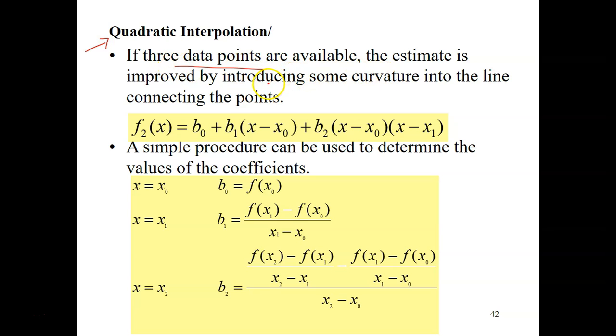Okay, so this is the formula for the second order interpolation. f2(x) equals b0 plus b1(x minus x0) plus b2(x minus x0)(x minus x1). So, what is b0? What is b1? And what is b2?